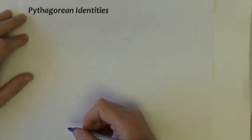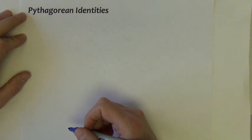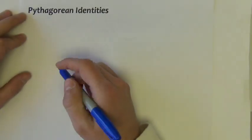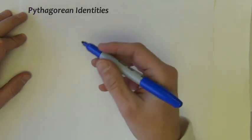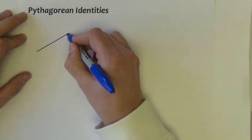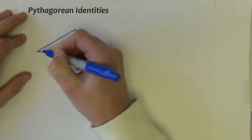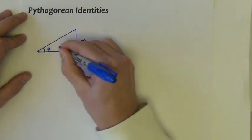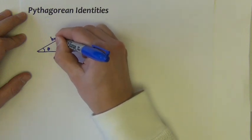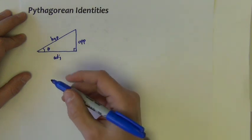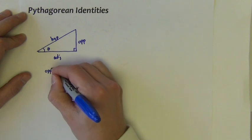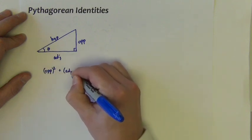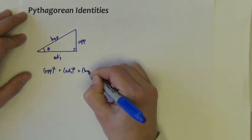Our next set of fundamental identities are called the Pythagorean identities. They're probably the most well-known or most used identities. Instead of just giving you the first one, let's develop a proof. Starting with a right triangle with one angle labeled theta, we label the sides: opposite across from the angle, adjacent, and hypotenuse. Pythagorean's theorem tells us that the opposite side squared plus the adjacent side squared equals the hypotenuse side squared.